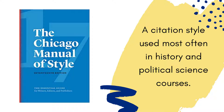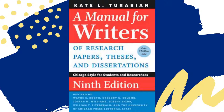Chicago style is most often used in history and political science courses. You may also hear it referred to as Turabian style, which is the student version of Chicago and follows the same guidelines, but in a more streamlined format.